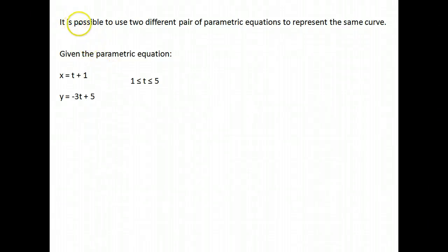This video is going to deal with the fact that it's possible to use two different pairs of parametric equations to represent the same curve. Parametric equations don't give you a unique curve necessarily. There are actually an infinite number of parametric equations that will give you the exact same curve in rectangular form. So let's practice this. How can this possibly happen?